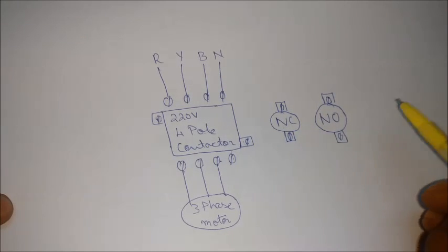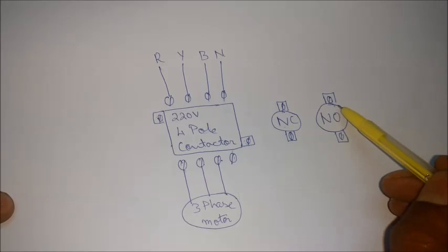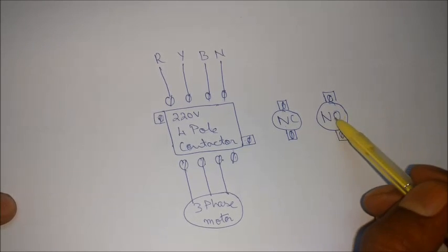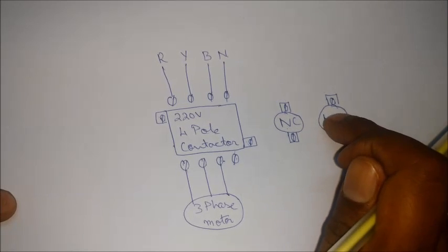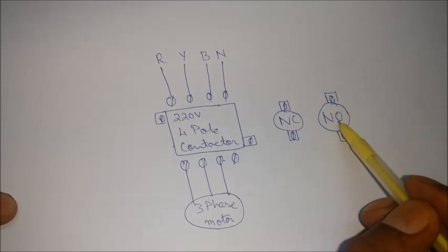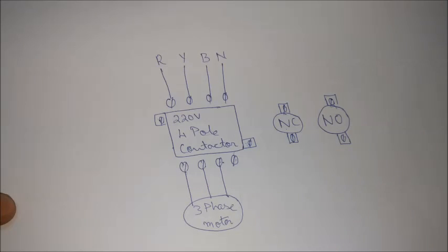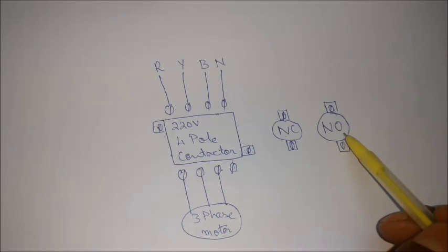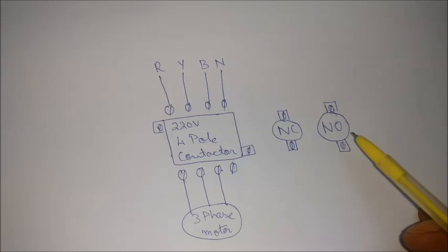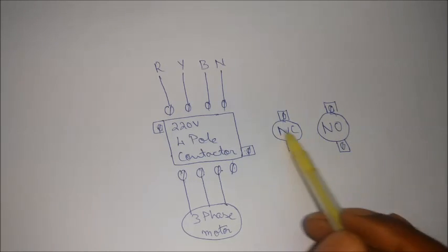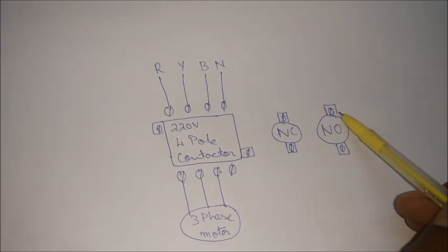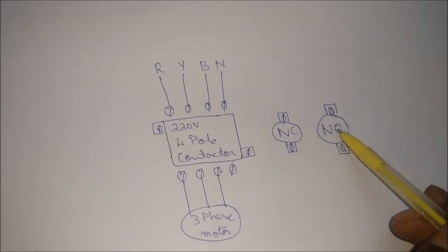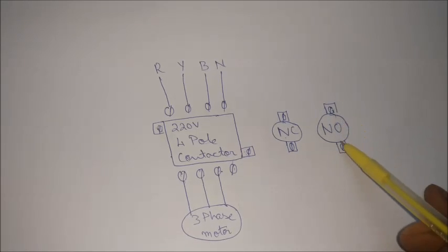So what does this mean? A normally open switch - these are push button switches. Once you press the switch, a contact occurs. But once you remove your finger out of the switch, the contact is released. The switch does not stay in its pressed position, it comes back to its original position. In a normally open switch, there is no linkage between the top and the bottom terminal, but when it is pressed, a link is created.